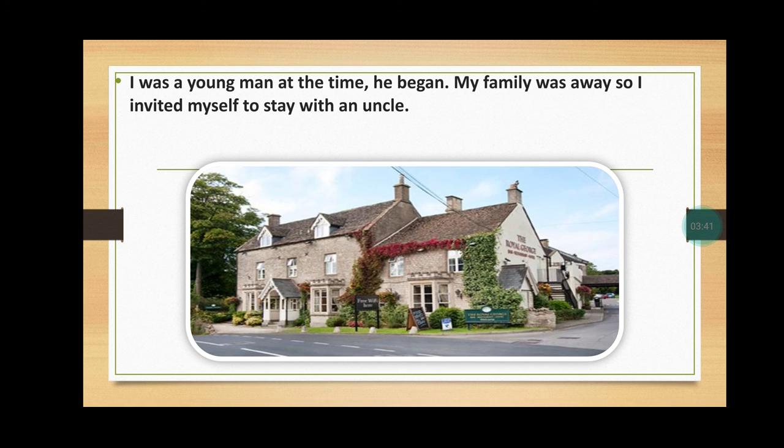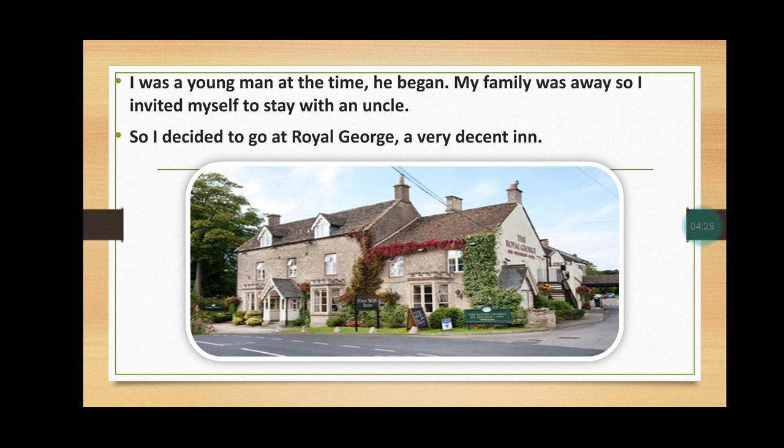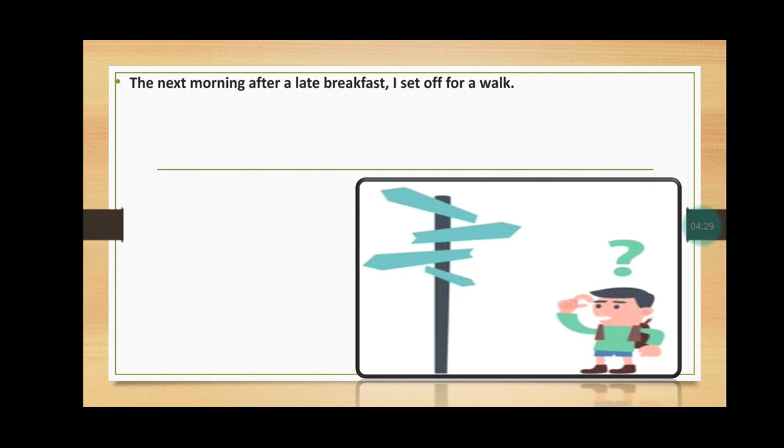Now he starts his story. The clean-shaven man says, "I was a young man at the time." He was telling his old story about when he was young and what happened to him. "My family was away, so I invited myself to stay with an uncle." When his family was away, he was all alone, so he went to stay with his uncle. He decided to stay at the Royal George, a very decent inn, as you can see in the picture.